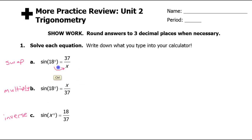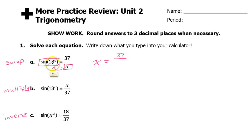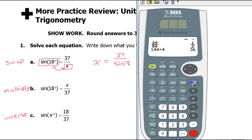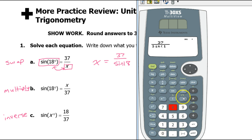When I say swap, I mean we're going to swap these two. We're going to put x here and we're going to put sine of 18 here. So that will give me x is equal to 37 over sine 18. So we just put that in the calculator — 37 over sine 18 — so that is 119.735, got to round up.